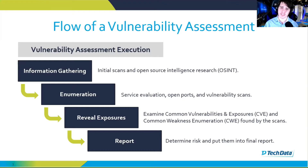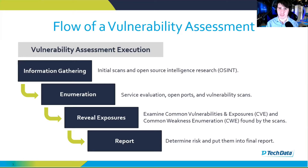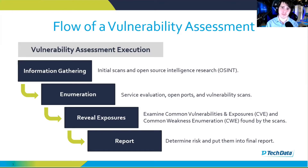Information gathering and enumeration kind of tie into each other, because once you're done with your open source intelligence or initial port scans, you'd then go into enumeration. You'd be looking at the reports from OpenVAS and Nessus, looking at the services that were discovered and seeing if there are any vulnerabilities associated with those. Once you see those vulnerabilities, you then reveal your exposures — examining the common vulnerabilities and exposures, or CVEs, as well as the common weakness enumerations, or CWEs, that can typically be found by these scans.